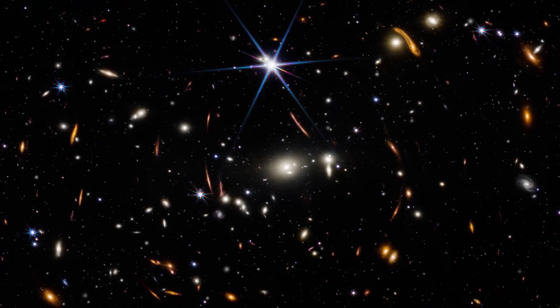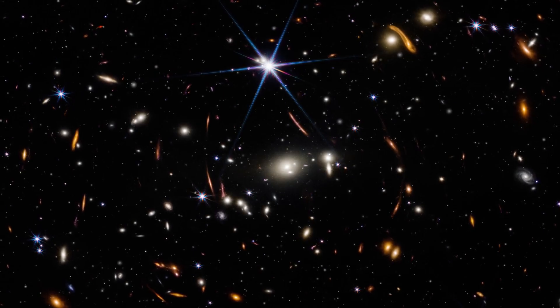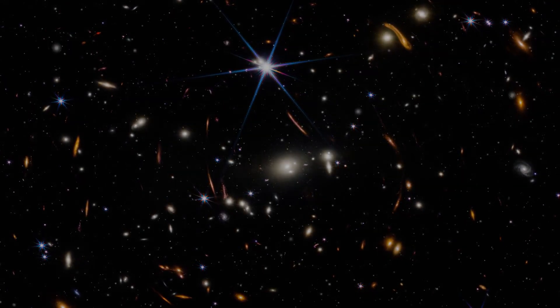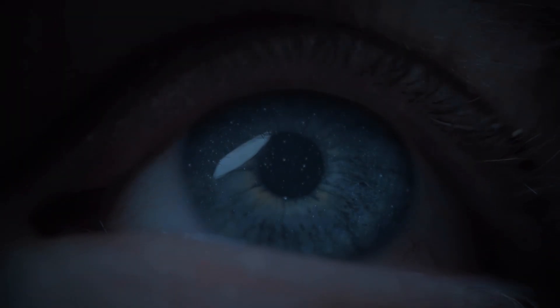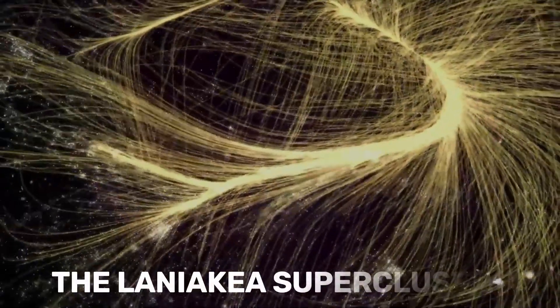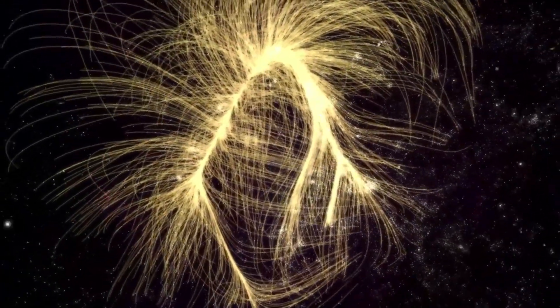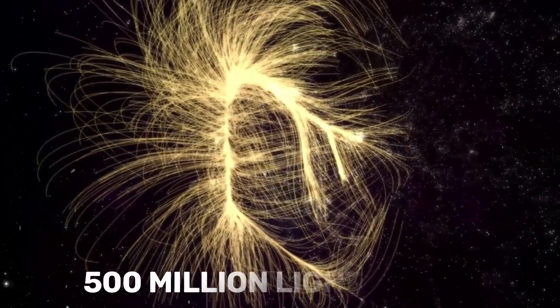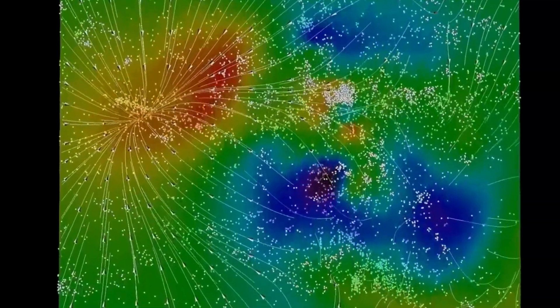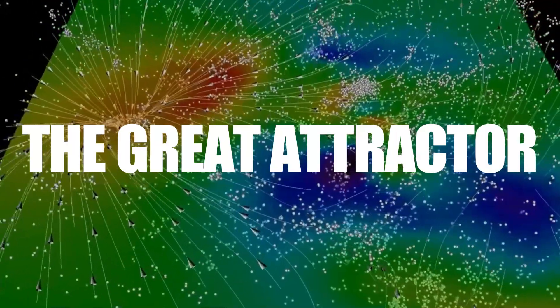It exerts a massive gravitational pull on the galaxies around it, including our own, which differs significantly from the uniform expansion of the universe. This behemoth is at the central point of the Laniakea supercluster, a vast collection of about a hundred thousand galaxies that spans more than 500 million light-years. It has a mass estimated to be tens of thousands of times that of the Milky Way. This region of space is the Great Attractor.